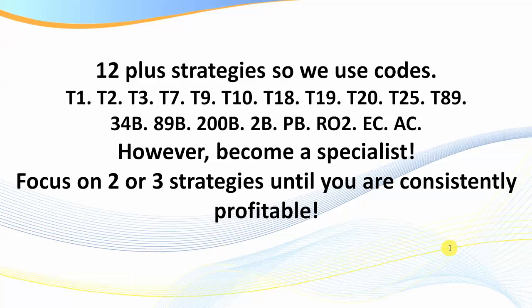If you're new or have seen many of my videos, the reason I talk in codes — like C1 and C2 — is that we have multiple strategies and it just makes it easier. In the Fast-Track Program I cover all of these comprehensively. For example, the EC is your entry chart and the AC is your anchor chart. With setups like the T1, T2, and T3, virtually every one is a pattern you'll see in every market multiple times a day. You only need to focus on two or three strategies until you're consistently profitable — staying a specialist keeps it much easier.